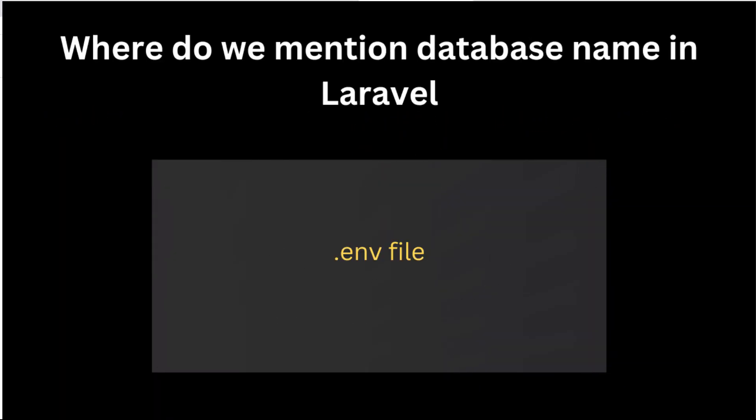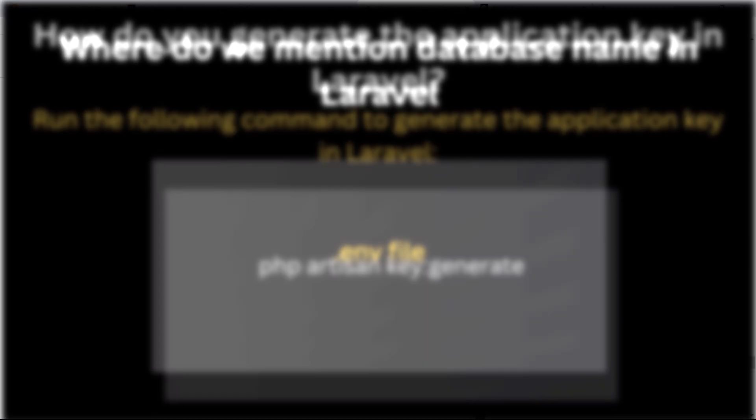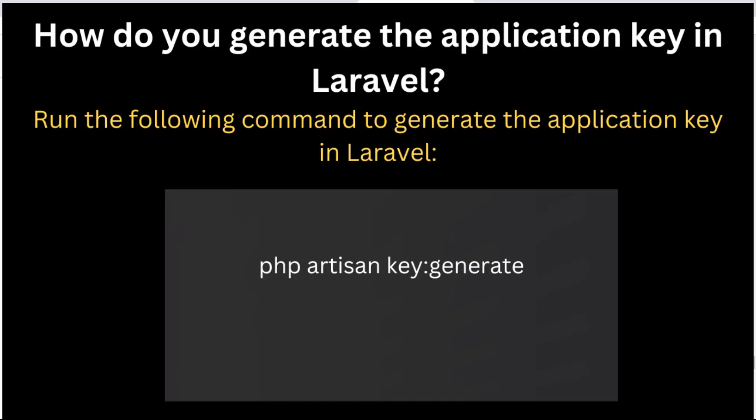Where do we mention the database name in a Laravel project? We mention the database name in the .env file. How do you generate the application key? To generate the application key, write: php artisan key:generate. This will create an application key in your project.